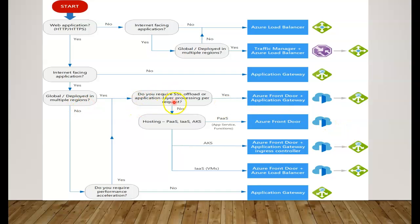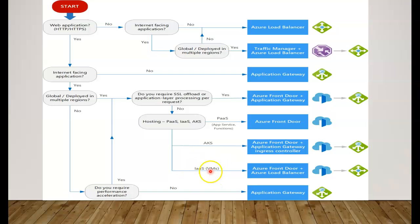If no SSL is required at global scale, you can host as a PaaS, IaaS, or Kubernetes service. If using AKS, you would end up with a combination of Front Door and Application Gateway integration. For an IaaS VM scenario, you would use a VM along with Front Door and Load Balancer as a combination.